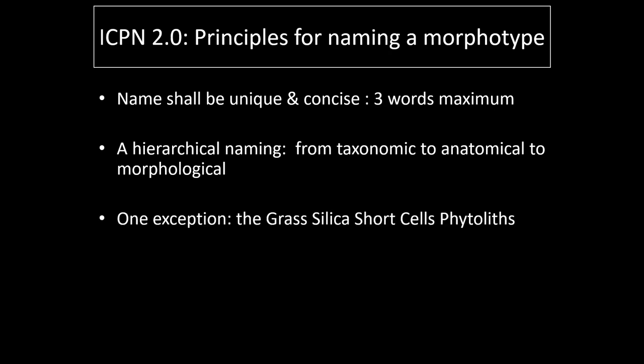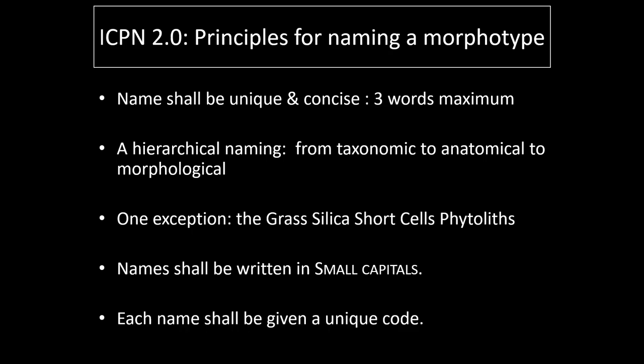The well-known grass silica short cells are an exception to this rule, in the sense that their taxonomic and anatomic origin and morphology are well-known and well-established. When published, a name shall be written in small capitals. To facilitate data management, each morphotype name shall be given a unique code. These are the principles for naming.